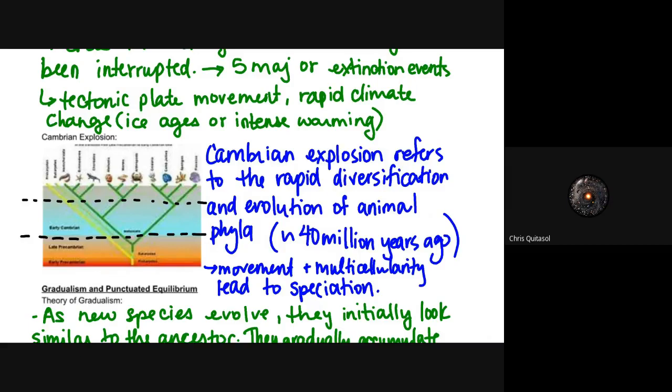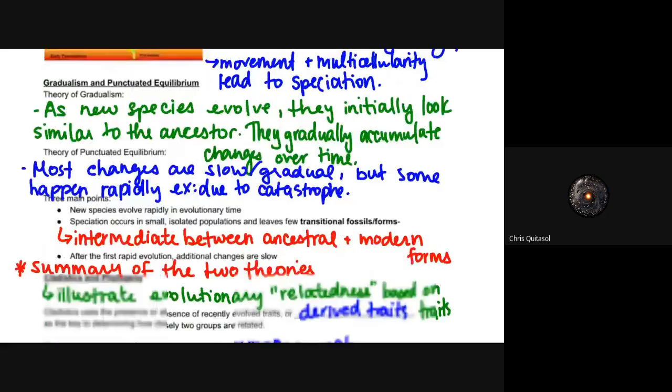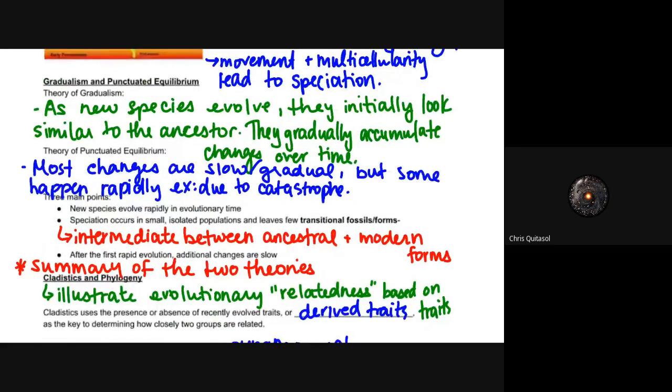There are a couple of ideas that we talk about in evolution with regards to macroevolution: the ideas of gradualism versus punctuated equilibrium. The theory of gradualism states that new species evolved—they initially look similar to their ancestor, and then they gradually accumulate changes over time. If you were to think of humans and how they compare to any type of ape-like creature, we look similar but very different at the same time, and those differences kind of gradually accumulated over time as the many different species that separate our ape ancestors and us went through those changes.